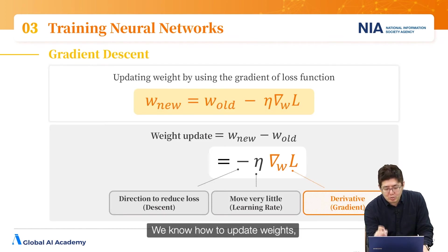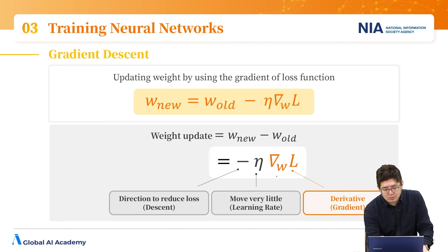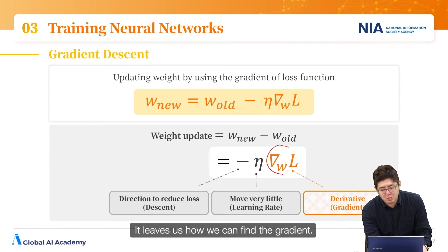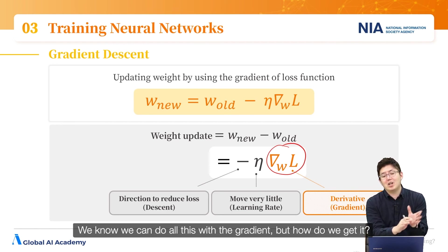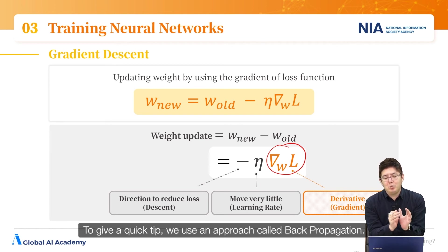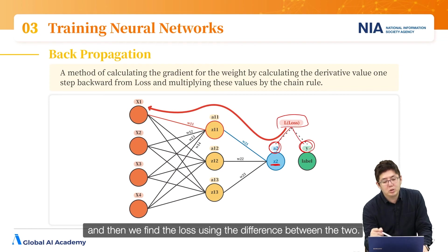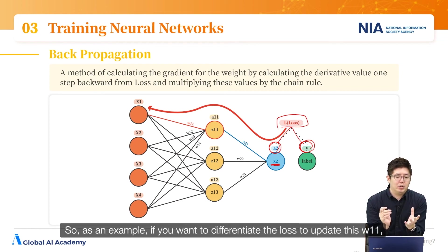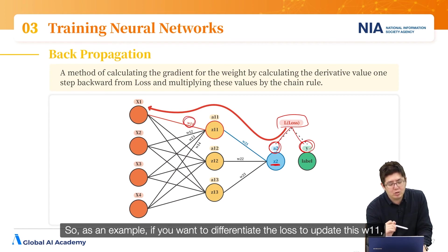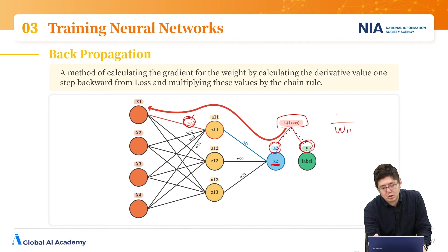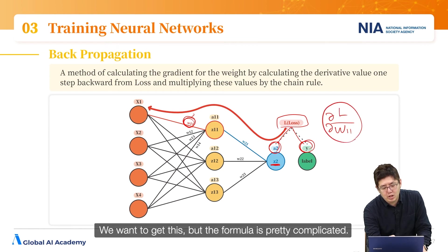Now that we've covered how to update weights and how much data to input using batches, it leaves us with how to find the gradient. We use an approach called back propagation — the diagram shows the method. Let's say the result from the network is a2 and the correct answer is y. We find the loss using the difference between the two and want to minimize it. For example, to differentiate the loss to update w11, it can be formulated like this — but the formula is pretty complicated.